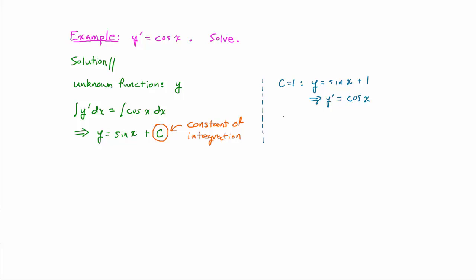If c is a different number, such as 2 thirds, then y equals sine of x plus 2 thirds, and again, the derivative y prime equals cosine of x. This is what we want, a function y satisfying y prime equals cosine of x.